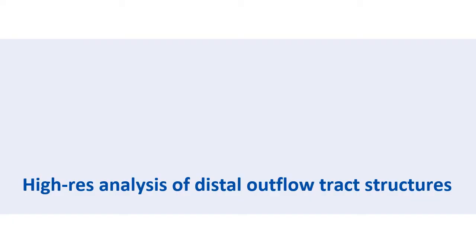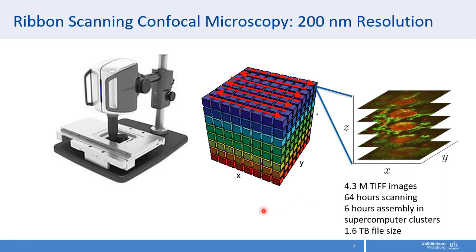High-resolution analysis of distal outflow tract structures. Using ribbon scanning confocal microscopy with 200 nm resolution, we scanned through whole eyes meandering down in a Z-stack, which created 4.3 million TIFF images. It took 64 hours of scan time and 6 hours of assembly time. We had to use a supercomputer cluster, and the file size was a quite respectable 1.6 TB.